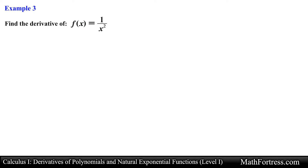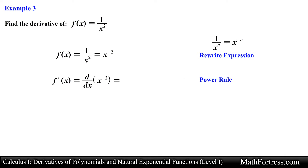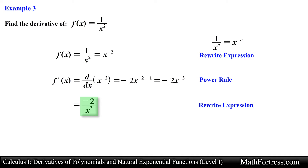Find the derivative of f(x) equals 1 over x squared. At first it seems we can't use any of the learned rules, but we need to rewrite the function into a derivative-friendly form. Recalling from algebra that a rational expression can be rewritten as a negative exponent, we rewrite this as x raised to the power of negative 2. Now applying the power rule, we bring down negative 2 and multiply by x raised to the power of negative 2 minus 1. Note we are adding two negative numbers, so the derivative simplifies to negative 2 over x cubed.